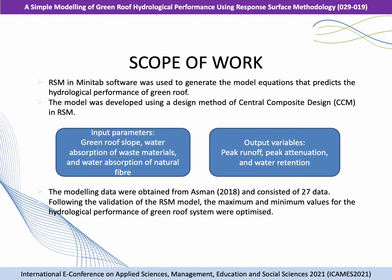RSM in MINITAB software was used to generate the model equation that predicts the hydrological performance of the green roof. The model was developed using a central composite design method. The modeling involves two items: input parameters and output variables. Input parameters include green roof slope, water absorption of the waste materials, and water absorption of the natural fiber. The output variables are peak runoff, peak attenuation, and water retention. The modeling data were obtained from Azman and consist of 27 data points. Following validation of the RSM model, the maximum and minimum values for hydrological performance were optimized.